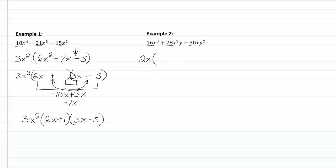And then when I divide that out, I have 16 divided by 2, which should be 8. x³ divided by x would be x².